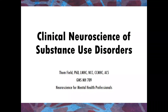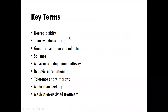In this video lecture we're going to learn about the clinical neuroscience of substance use disorders. This lecture covers important information about neuroplasticity, tonic versus phasic firing, the role of gene transcription in addiction processes, salience and its role in addiction, the mesocortical dopamine pathway, behavioral conditioning models for addiction, and how those play into our understanding of tolerance and withdrawal. We'll also learn about medication seeking and the role of medication assisted treatment.